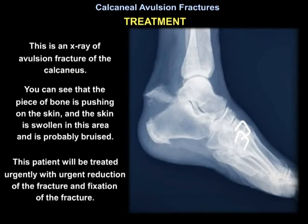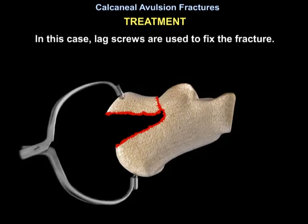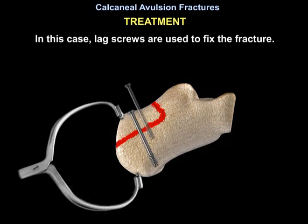This X-ray shows an avulsion fracture of the calcaneus. You can see the piece of bone is pushing on the skin, and the skin is swollen and probably bruised in this area. This patient will be treated urgently with reduction and fixation of the fracture — in this case, lag screws are used to fix the fracture.